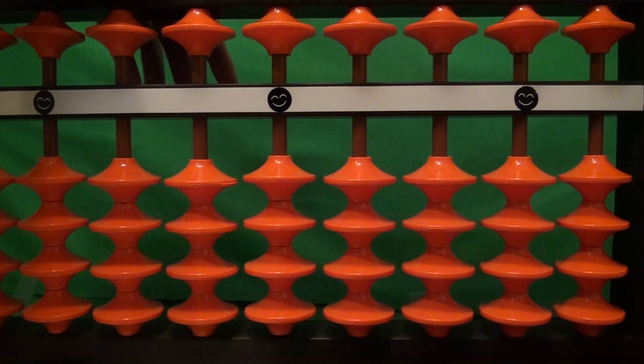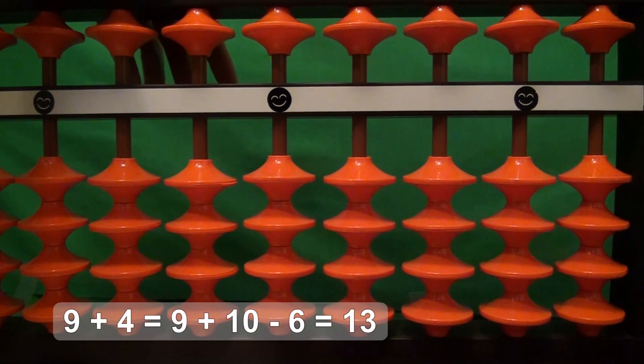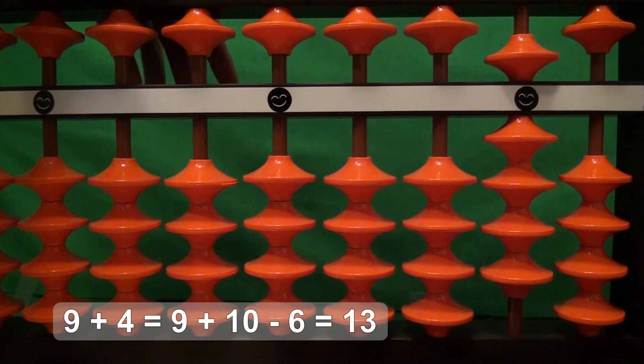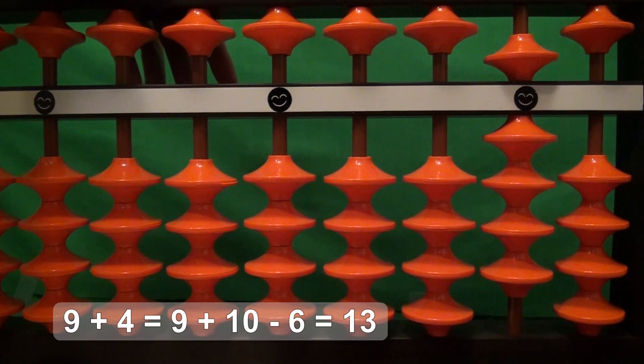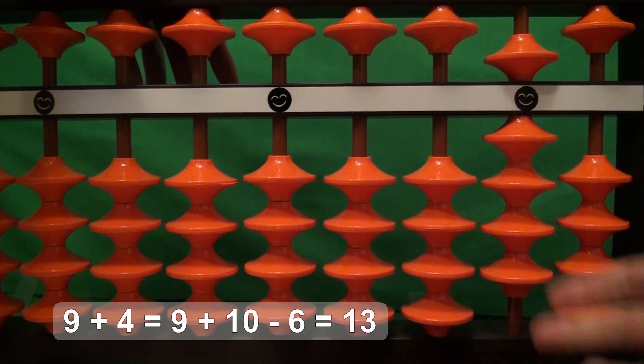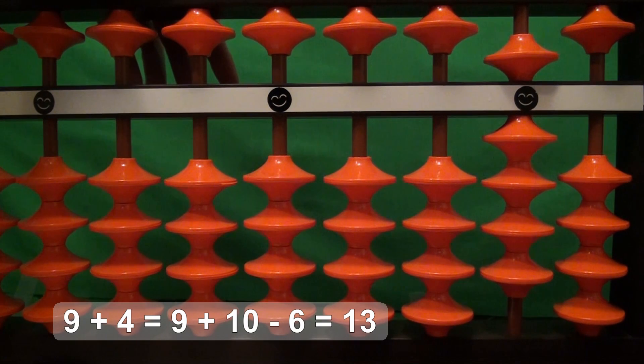Our next problem is 9 plus 4. 5 and 4 is equal to 9. We want to add 4. We don't have 4 beads available to use. All 4 beads are in use right now. We can't add a 5 and take away 1.